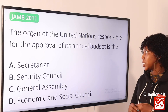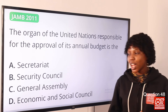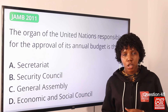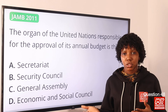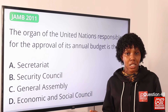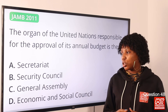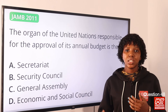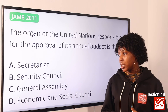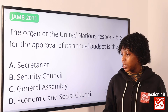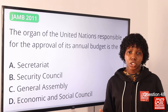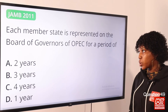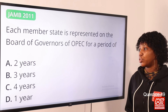Question 48: The organ of the United Nations responsible for the approval of its annual budget is — the answer is option C, the General Assembly. The General Assembly is the principal organ of the UN. It approves the budget, admits new members, and appoints the Secretary General. The Secretariat carries out day-to-day work, the Security Council ensures peace and security, and the Economic and Social Council addresses economic and social challenges. We also have the Trusteeship Council and the International Court of Justice.